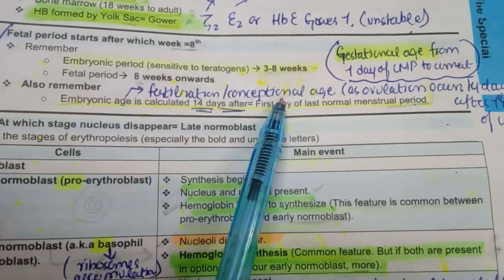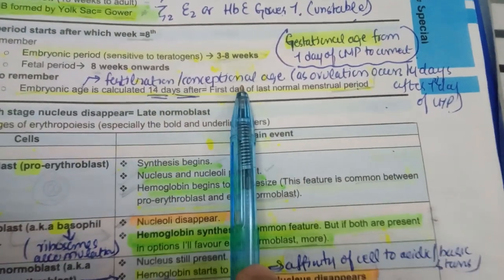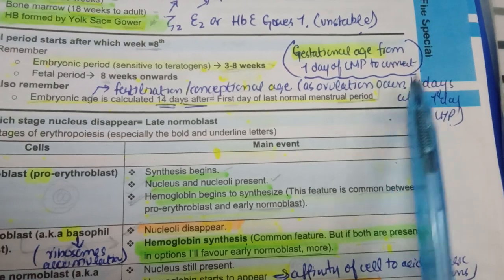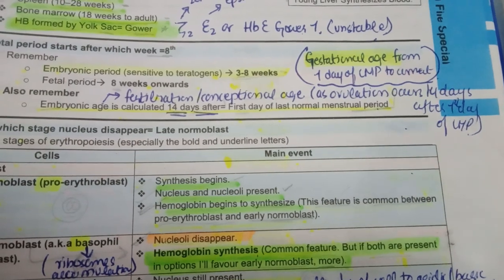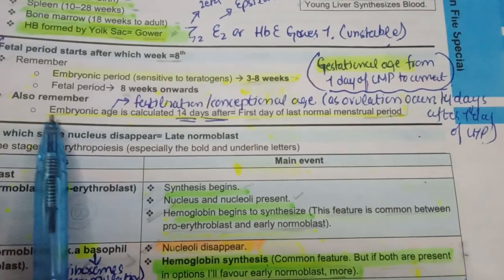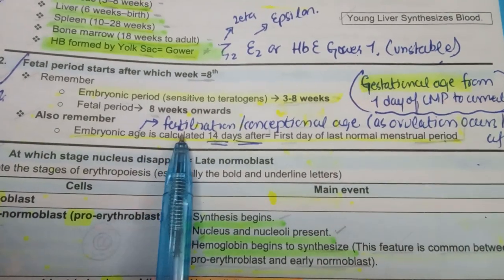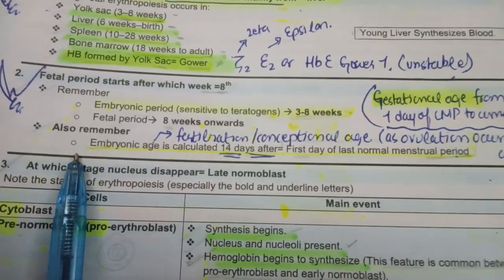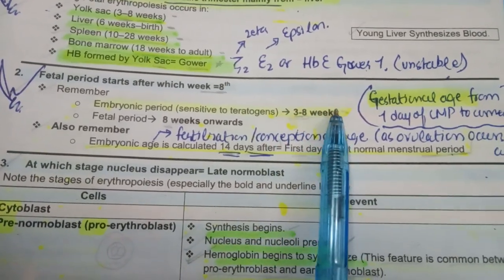Now understand fertilization age and conceptional age. Ovulation occurs 14 days after the first day of LMP. If you consider a 28-day cycle, ovulation happens on day 14, after which the luteal phase begins with progesterone secretion from the corpus luteum. So embryonic age is calculated 14 days after the first day of LMP — this is also called fertilization or conceptional age. Ovulation happens 14 days later. The embryonic period is 3 to 8 weeks, when the embryo is forming.